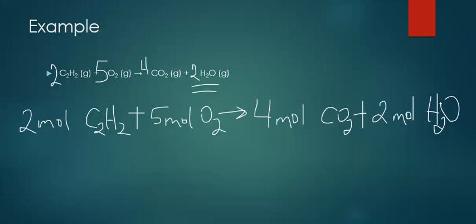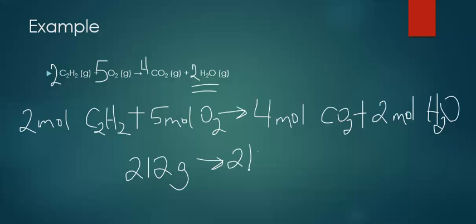If we look at the mass, just like we did in the previous problem, mass is always conserved. Moles were not — we started with 7 moles and ended up with 6 moles. But mass is conserved. If you add up the masses of all reactants, you get 212 grams. So the mass of the products will also be 212 grams.